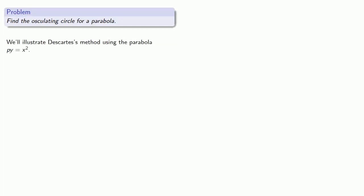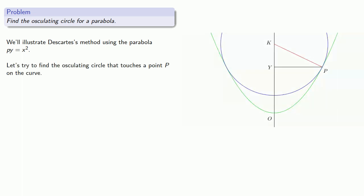And this allows Descartes to solve problems like find the osculating circle for a parabola. Descartes actually considered this problem for what we would call a horizontal parabola, but we'll illustrate Descartes' method using a more familiar parabola, y equals x squared. So our goal, let's try to find the osculating circle that touches a point p on the curve. So to do that, we'll draw line py ordinate-wise and let the center of the circle be at k, where ok is equal to s. Then let py equals x and oy equal y. That also means ky is s minus y.